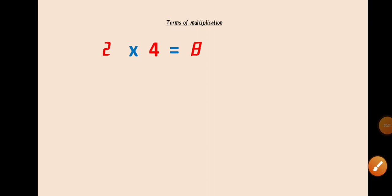Terms of Multiplication. Children, we can define the terms used in multiplication as follows: the first number is called the multiplicand. Multiplicand means a quantity which is to be multiplied by another number. As you can see, this number is multiplied by 4.